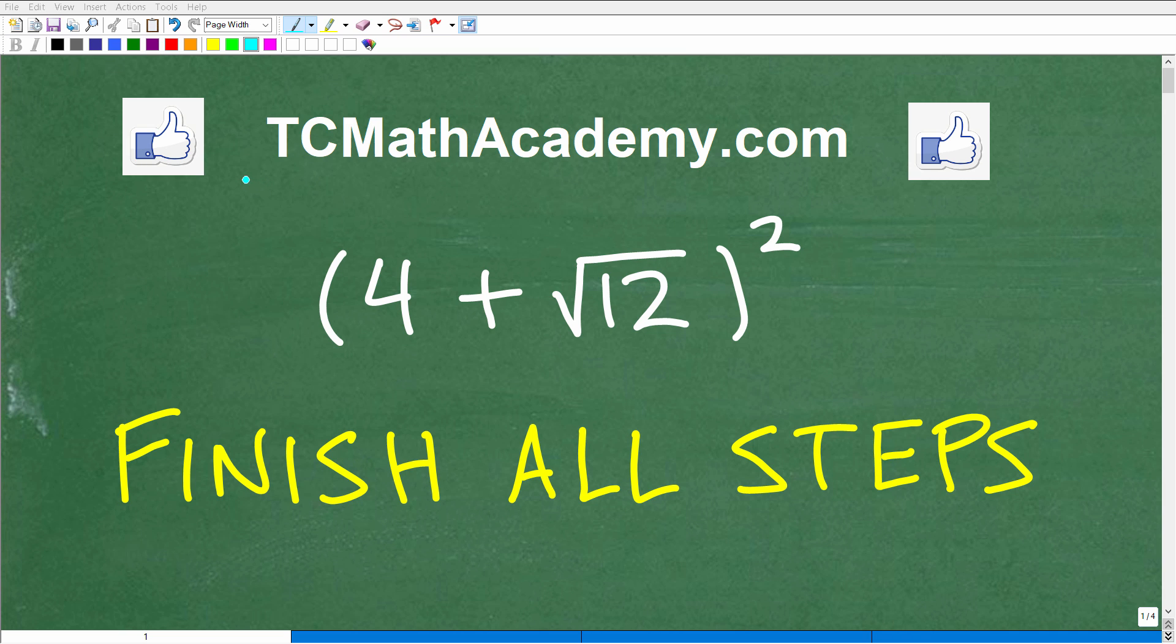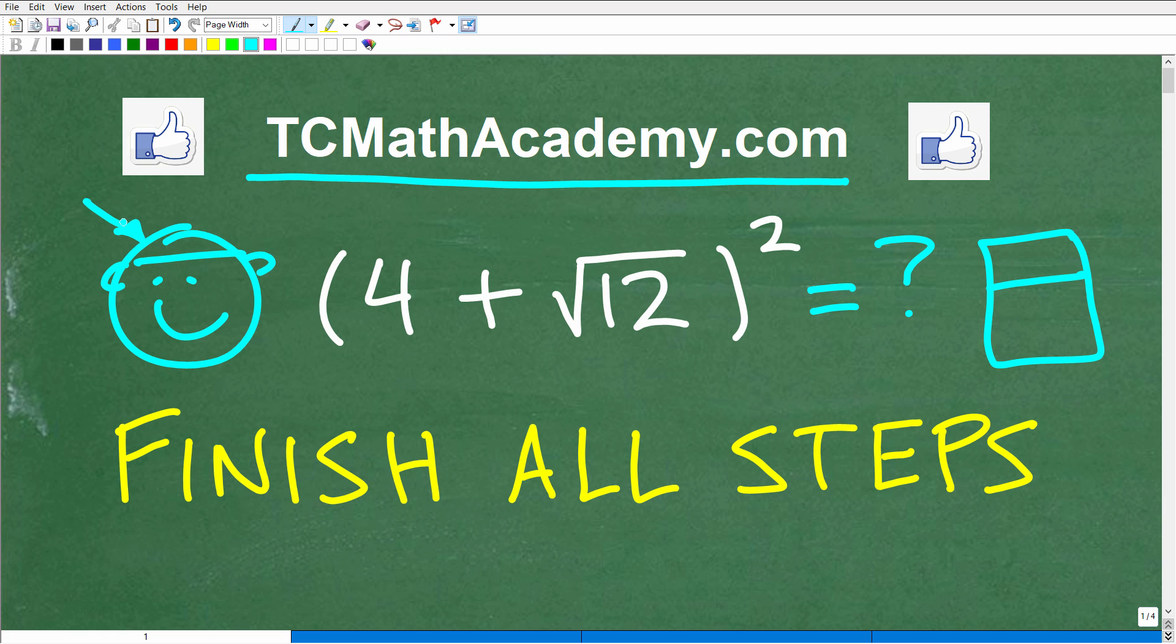Hello, this is John from TC Math Academy, and in this video we're going to figure out what 4 plus the square root of 12 squared is equal to. The answer is not going to be some sort of decimal, so we want to put our calculators away, except for that one between your two ears, which is better than AI, it's actually a supercomputer. So we're talking basic algebra here.